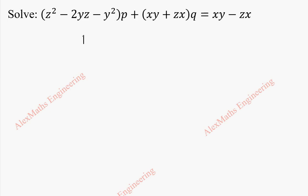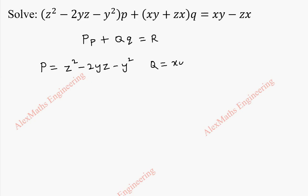This is of the form capital P times small p plus capital Q times small q equal to R. From this, capital P is the coefficient of small p, which is z squared minus 2yz minus y squared; capital Q is xy plus zx; and capital R is xy minus zx.